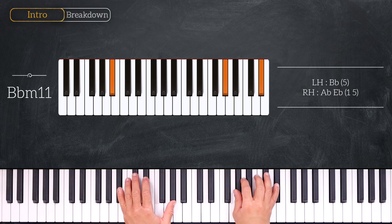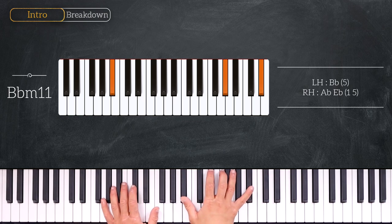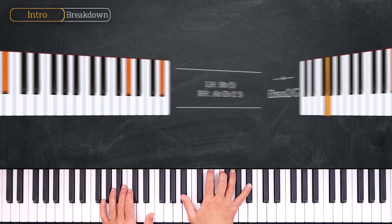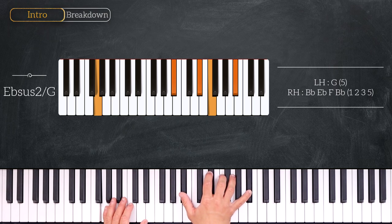So we play Bb on the left hand and Ab and Eb on the right. Then we will play this chord, which is an Eb sus2 over a G. So we play a G on the bass, Bb, Eb, F and Bb.